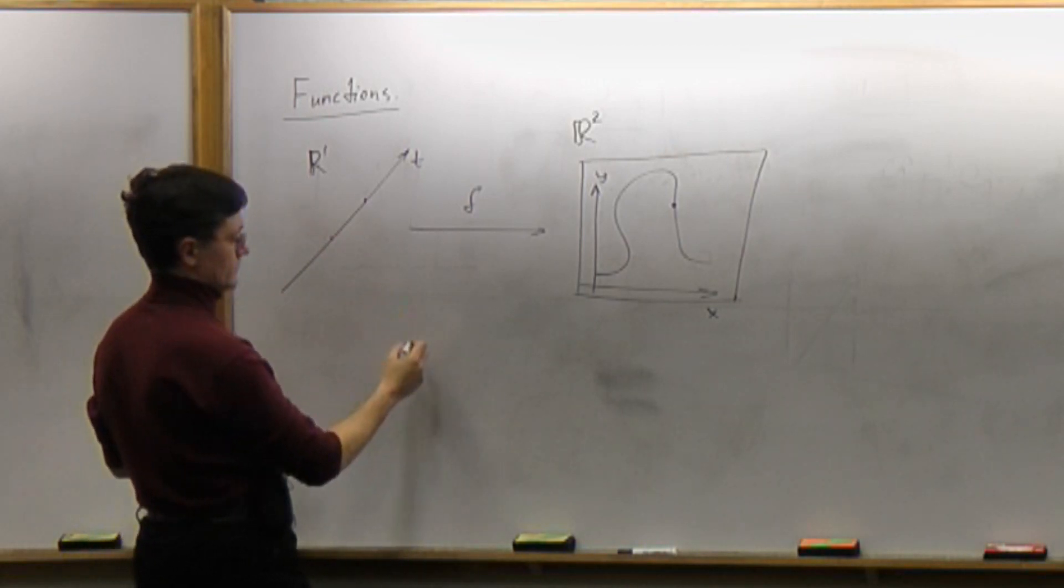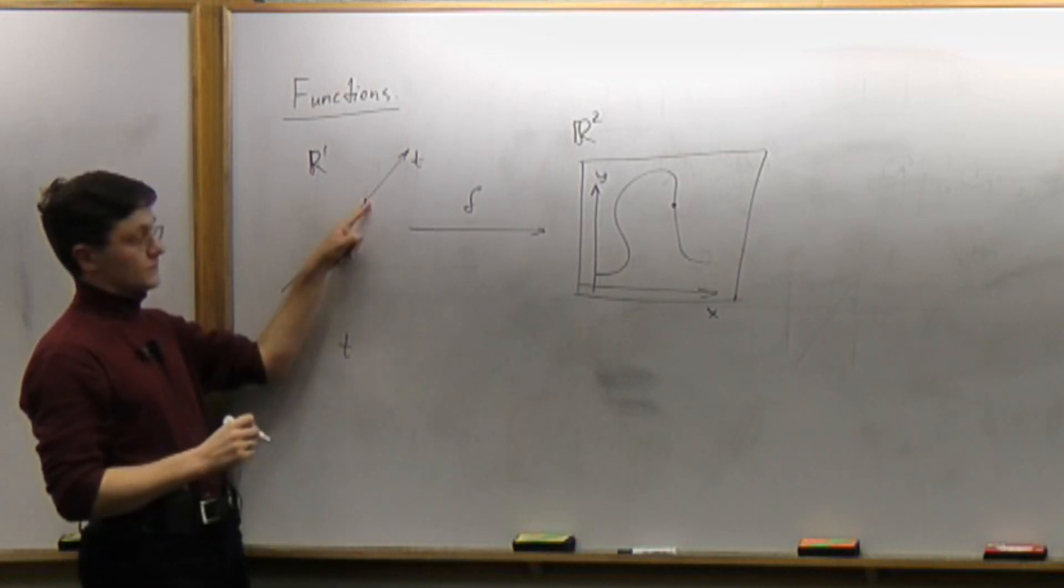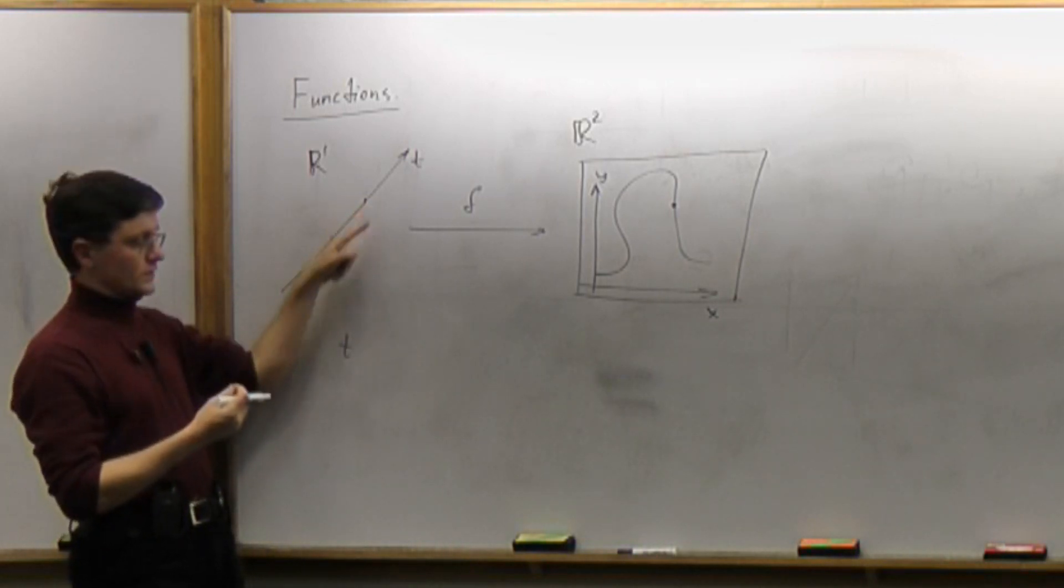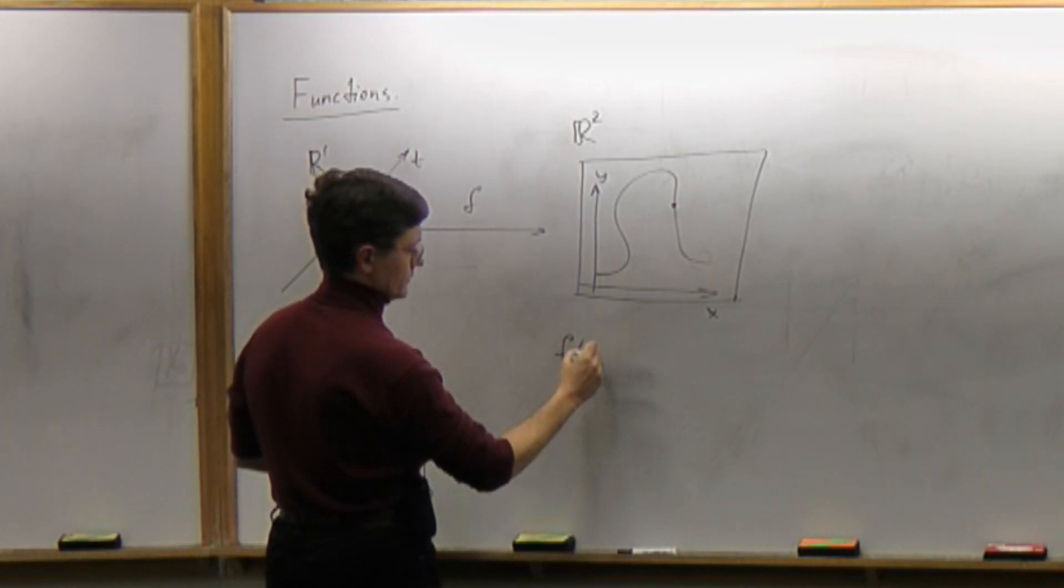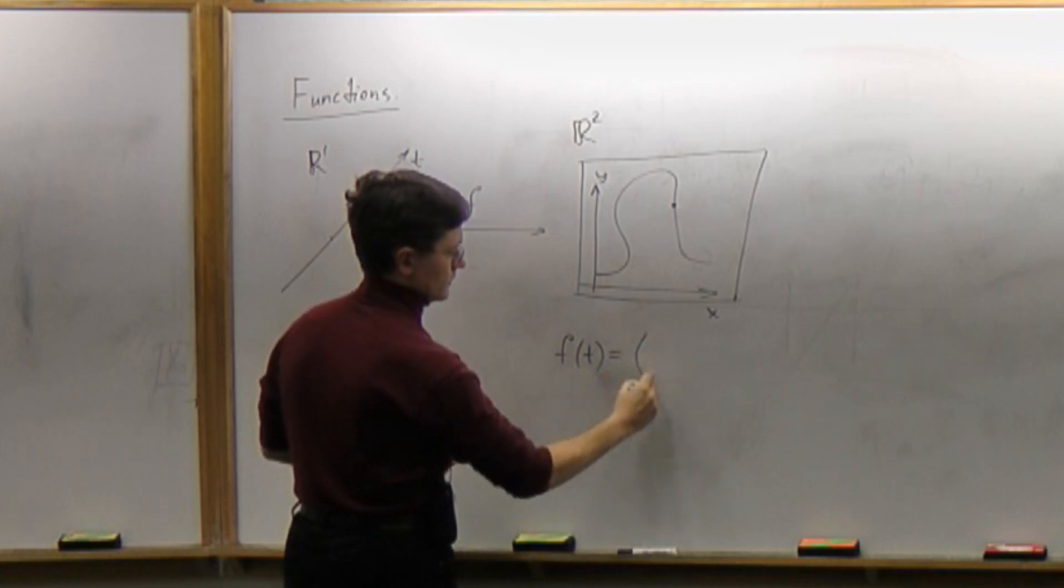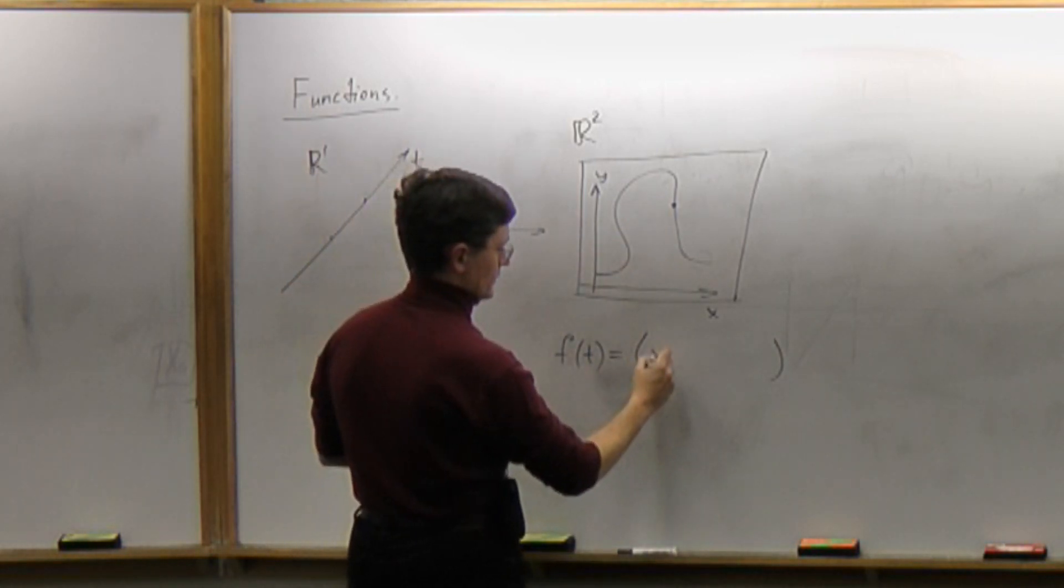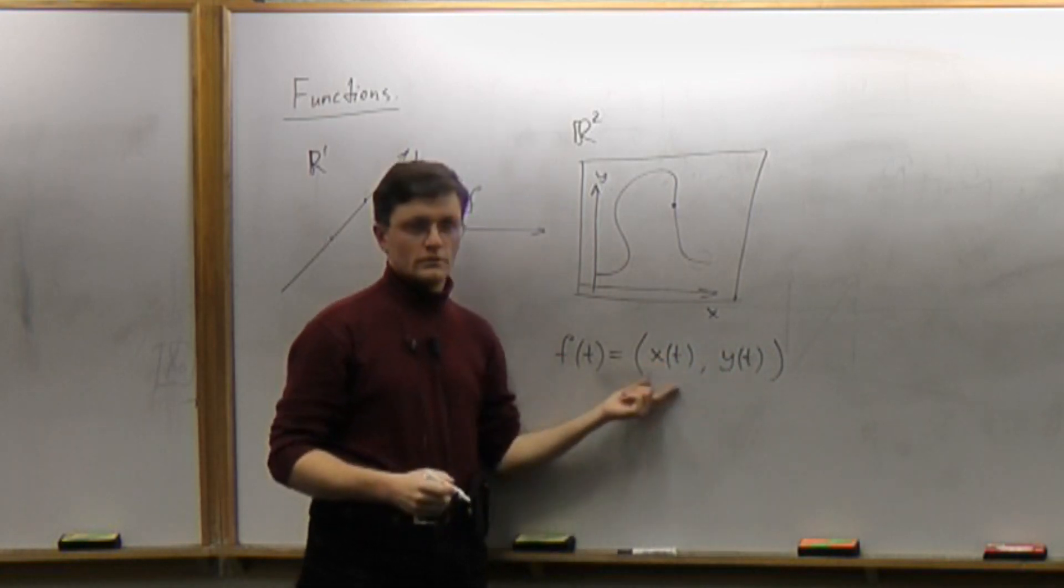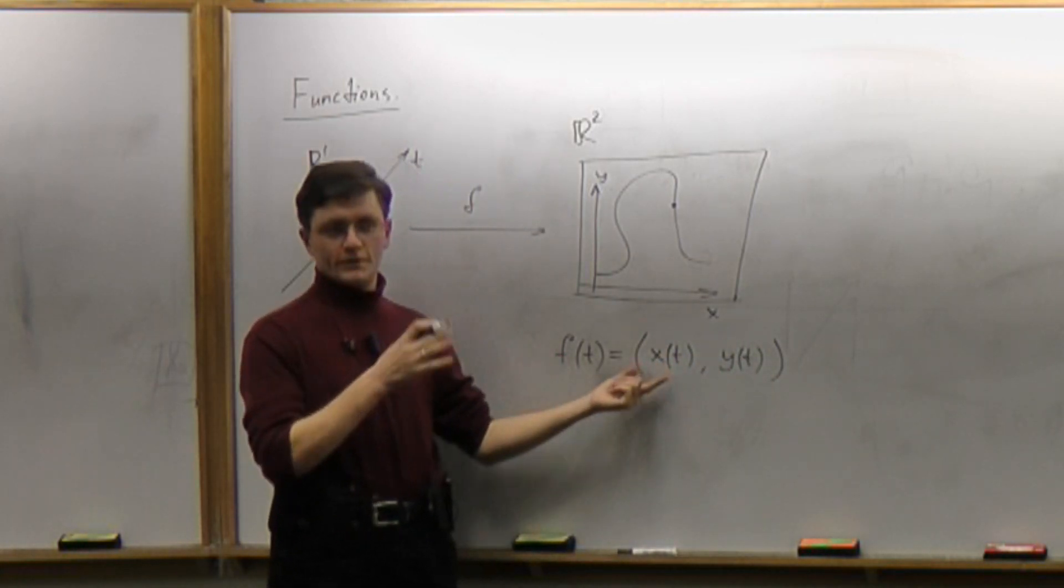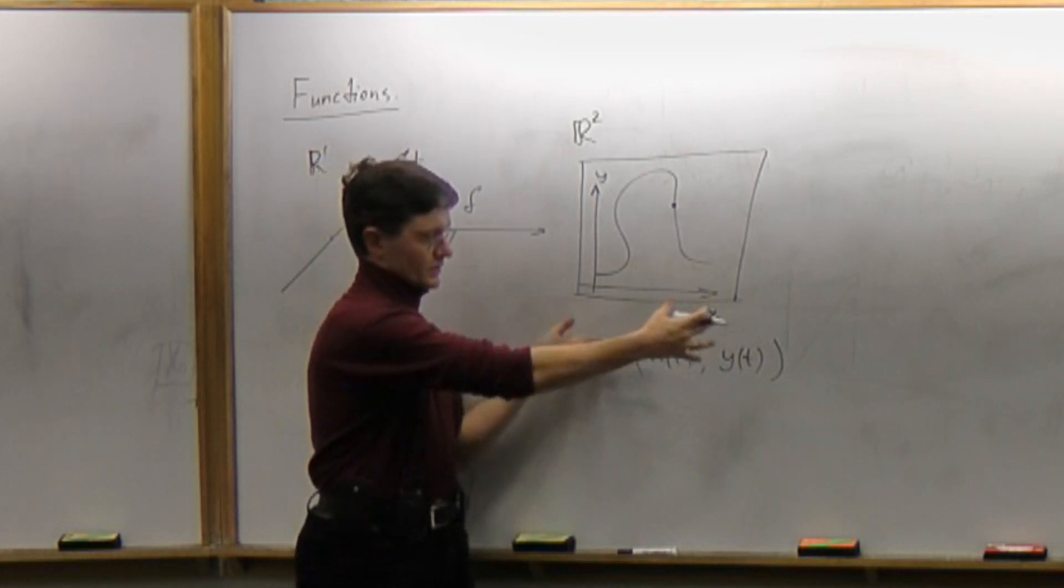So that means for any value of T, for any number here, you are supposed to get two numbers as the output of the function: x of T and y of T. And each of those is the usual function of one variable, the one you studied in Calc 1. The only difference is that now we consider those together.